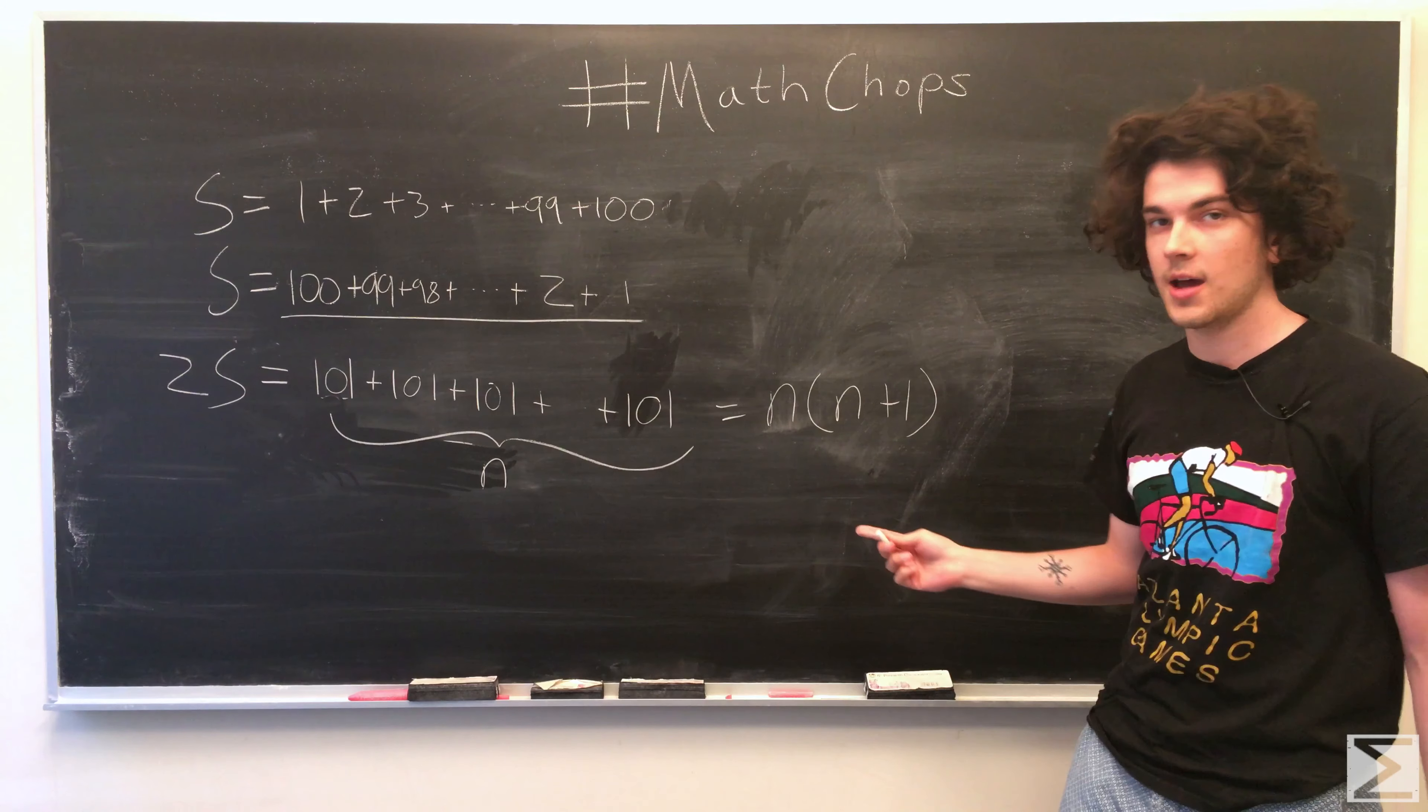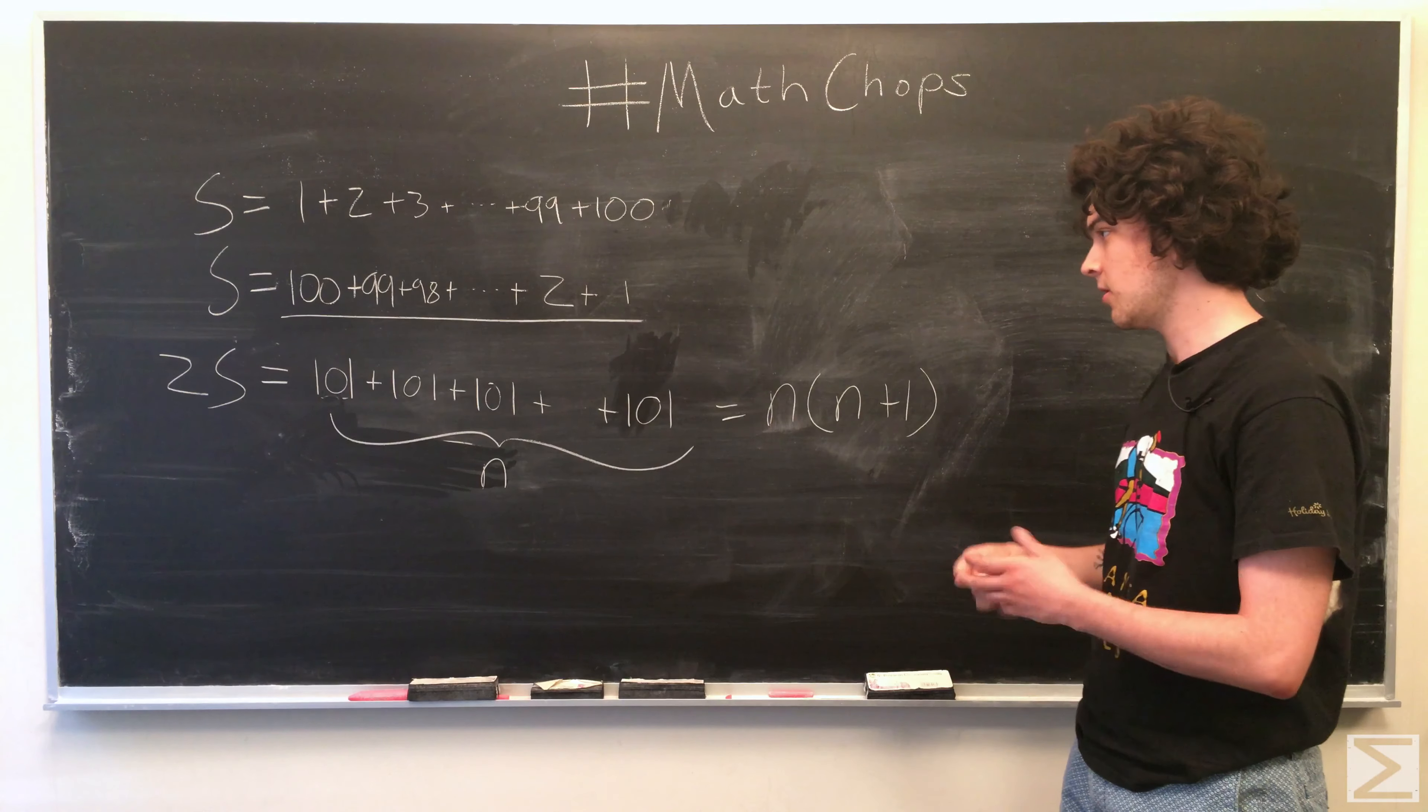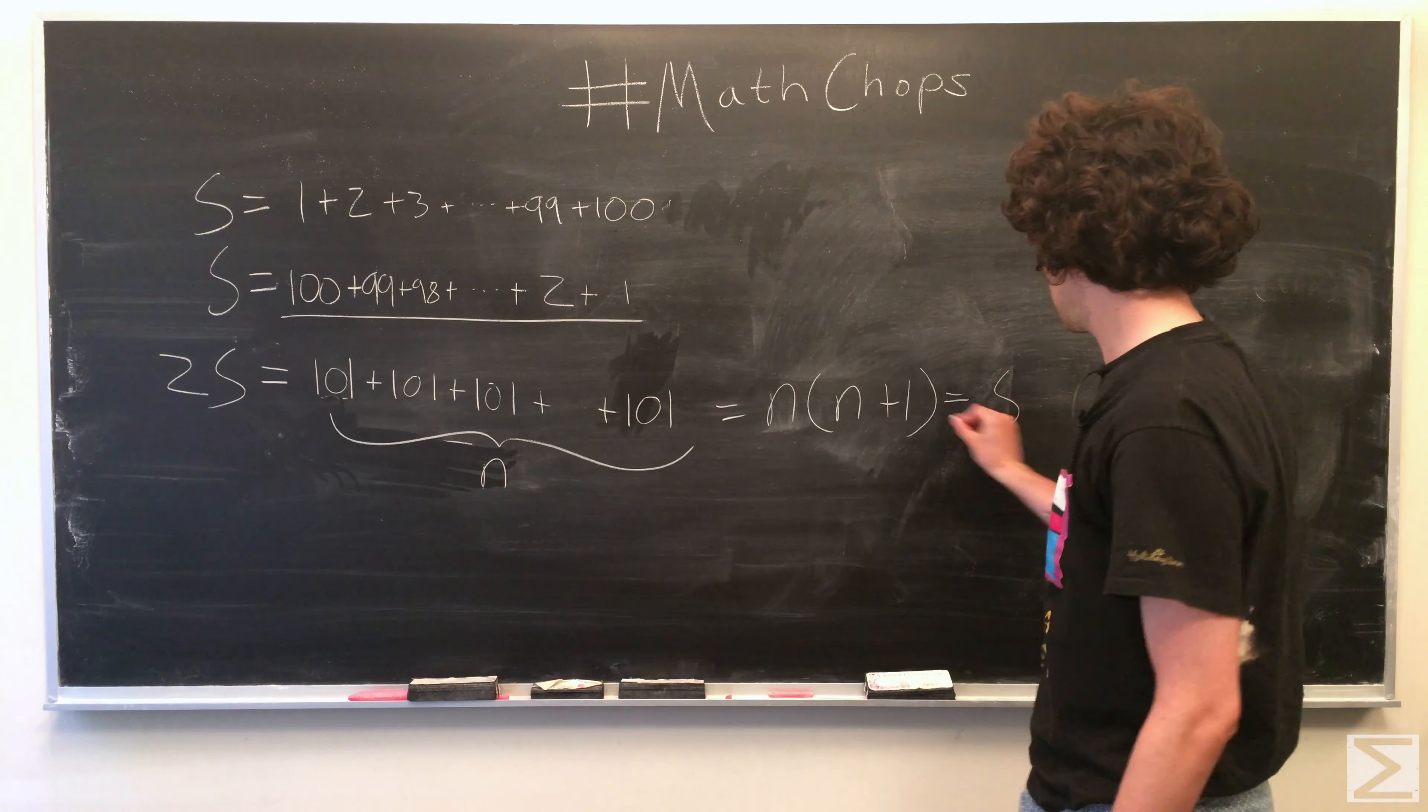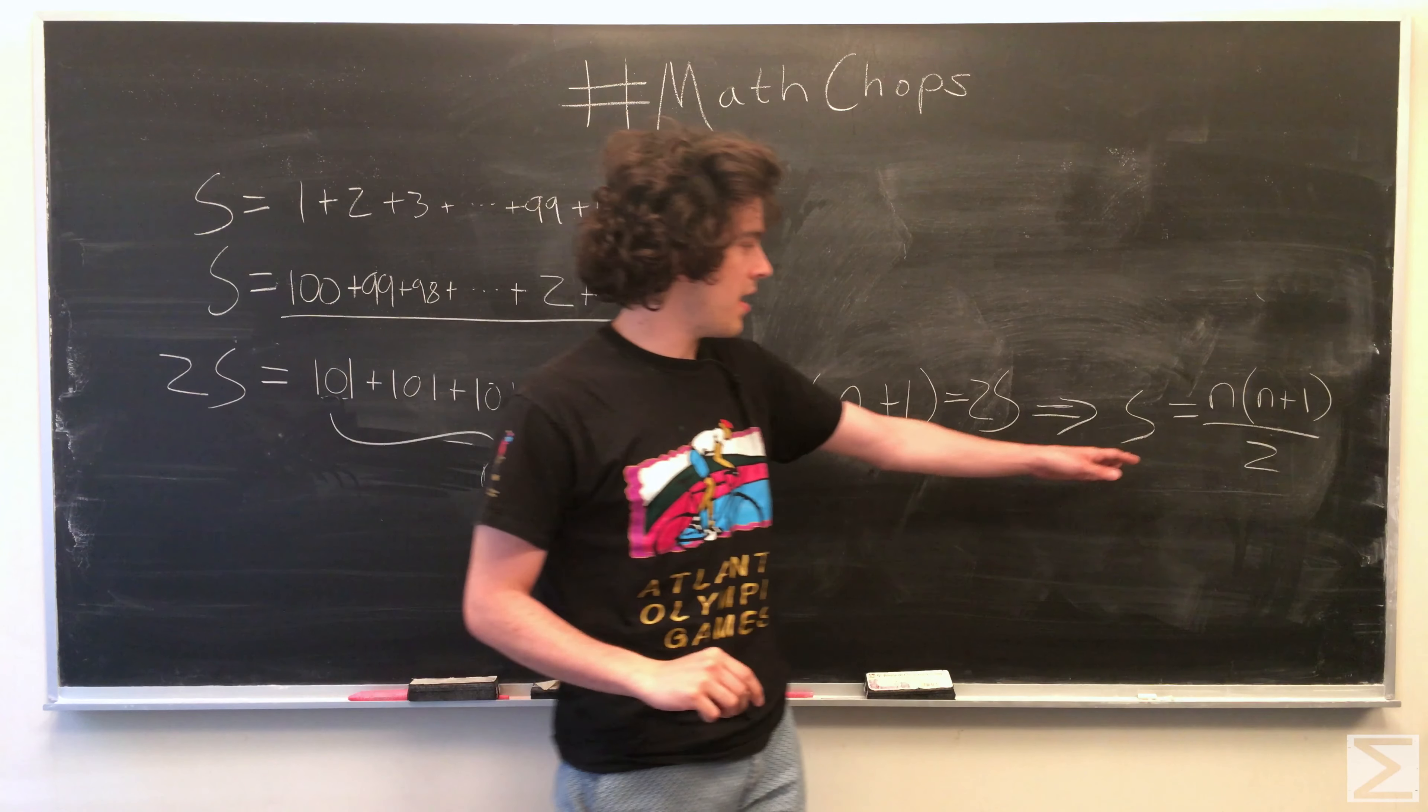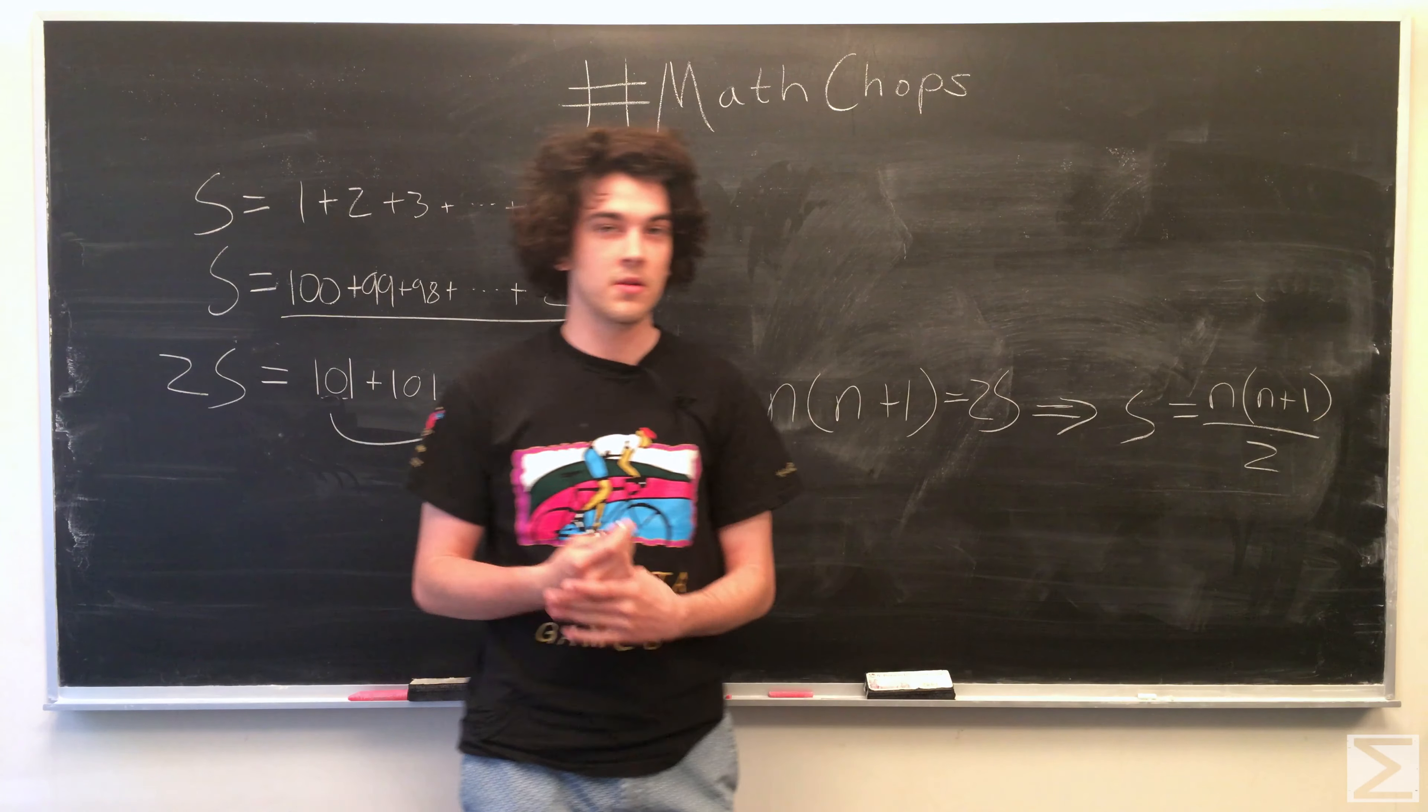So n times (n plus 1) is equal to our augmented sum, and that augmented sum is just twice our original sum.